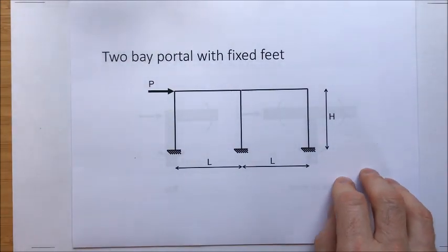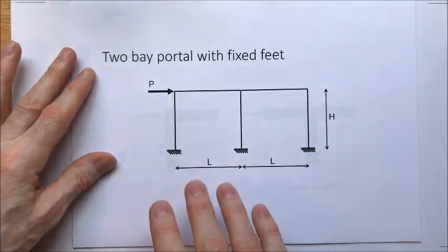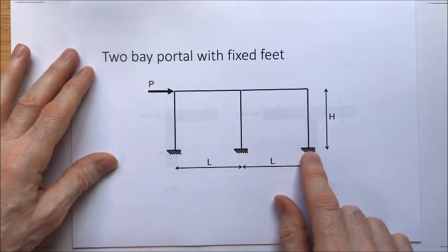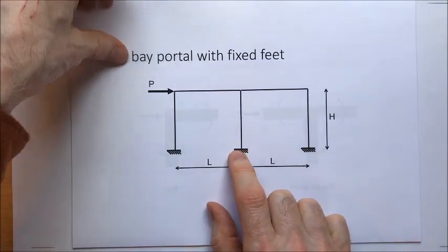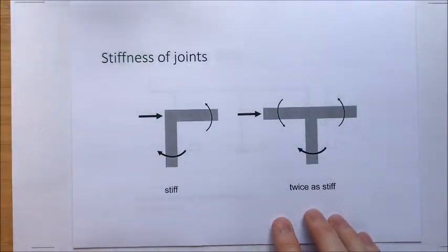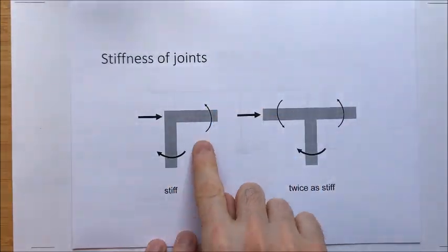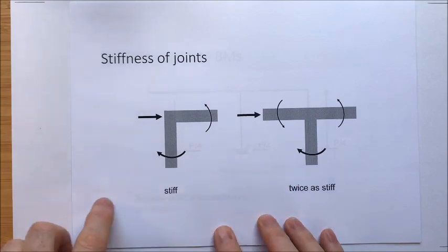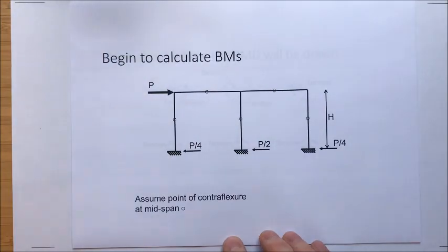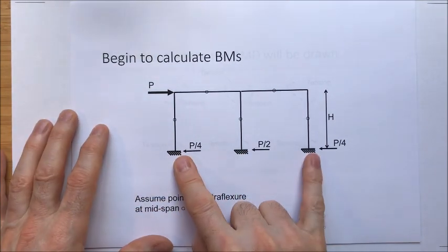Now for a two-bay portal frame with fixed feet. The key difference is that when we're considering the stiffnesses of the columns to calculate the reactions, the central column must be treated differently to the outer columns — because it's twice as stiff. It has two hands on the handlebars; the outer columns each have one. So if the central column is twice as stiff, it attracts twice the load and therefore twice the reaction. With force P applied to the frame, we get P/2 for the central column and P/4, P/4 for the outer columns.